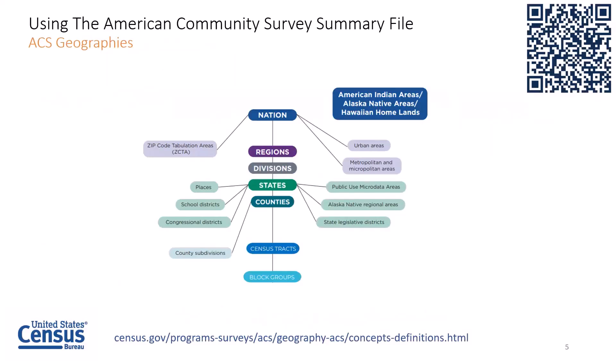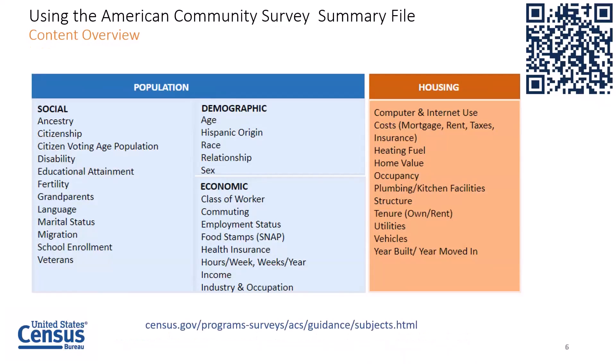Regarding the geographies the ACS covers, the ACS provides data for more geographies on an annual basis than any other household survey. Looking at the image you can see the hierarchy of geographies and how they relate to one another. The ACS's unique ability to report on a wide range of geographies is what gives it such a broad appeal. The content collected by the ACS can be grouped into four main types of characteristics: social, demographic, economic, and housing.